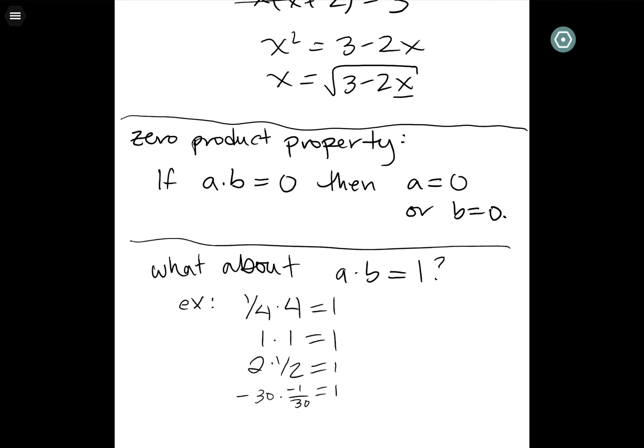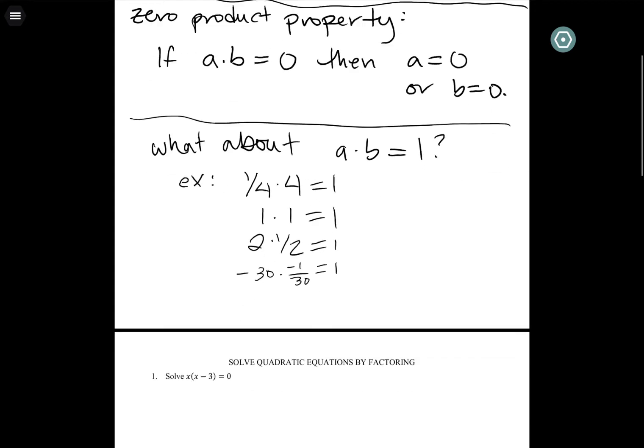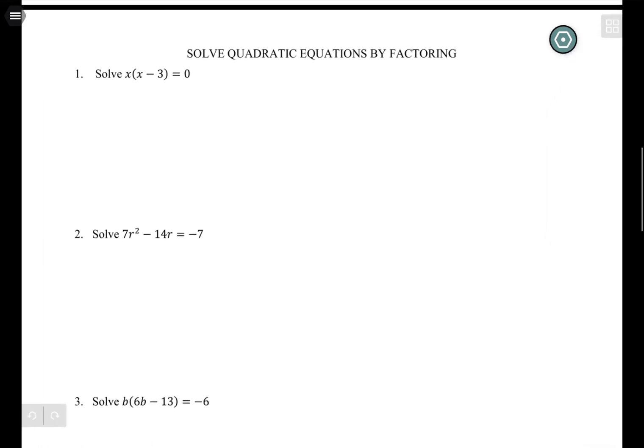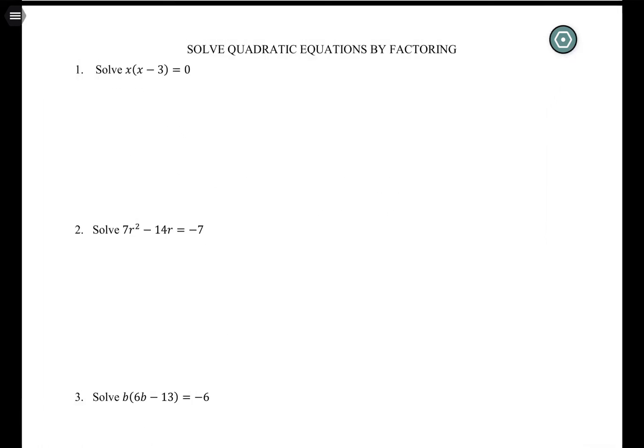Basically what we're going to do is we're going to say, okay, well if we can factor, if we can set this equal to zero and factor, then we can claim that the solutions happen if either one of the factors is zero. And the reason this is helpful is because it allows us to break one messy equation up into two simpler equations where we can get down to a single variable.